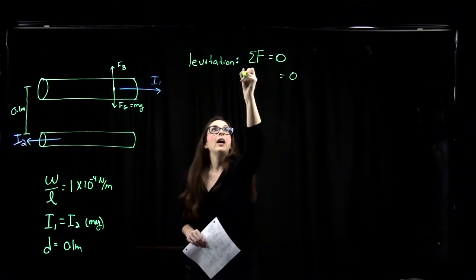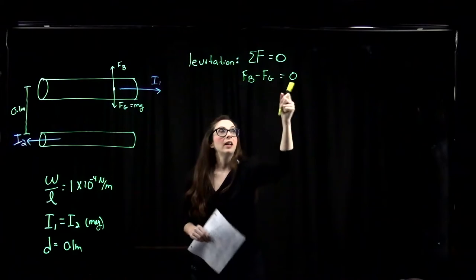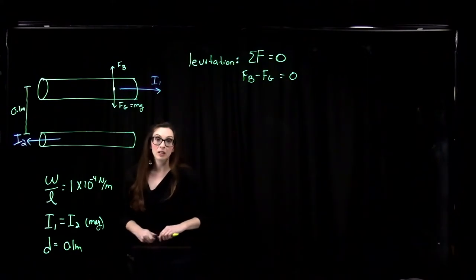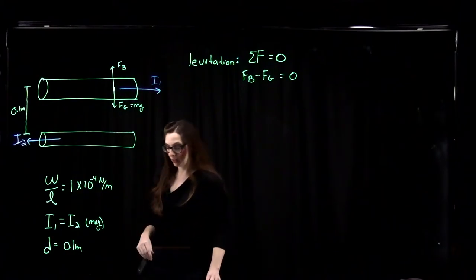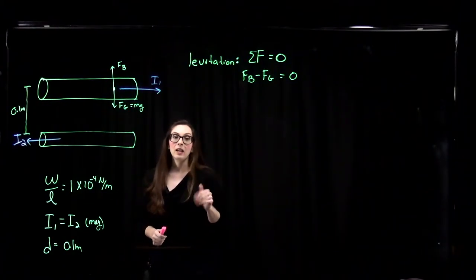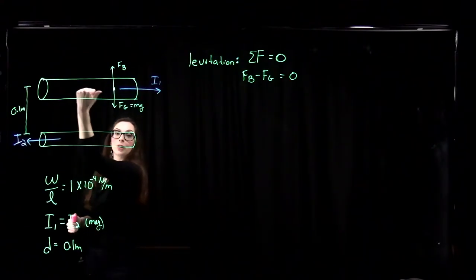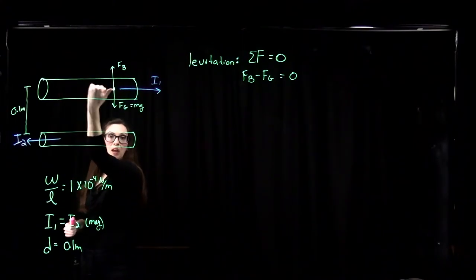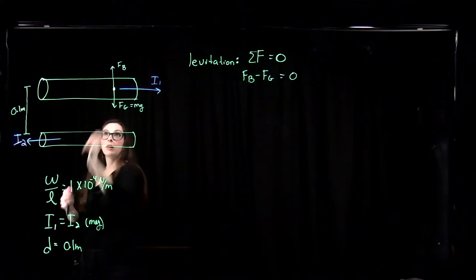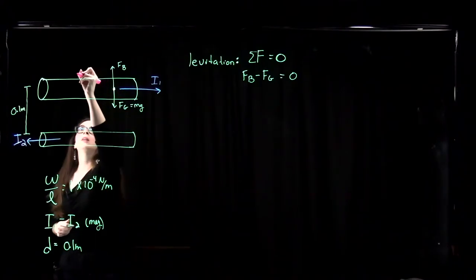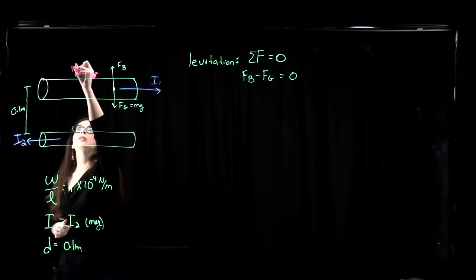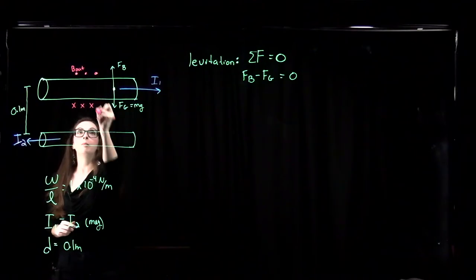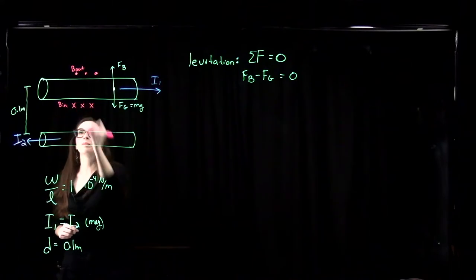Before going further, let's think about the direction of the magnetic field from the current in these wires. Using the second right-hand rule, if my thumb points in the direction of current, my fingers curl in the direction of the magnetic field. The fingers come out of the board on top and go into the board on the bottom side of wire one.